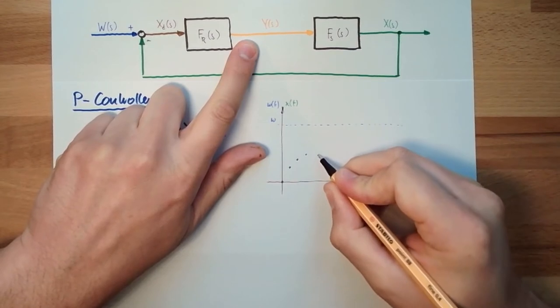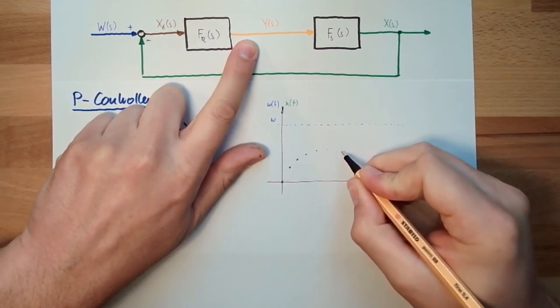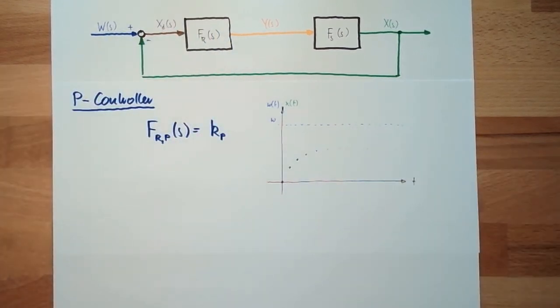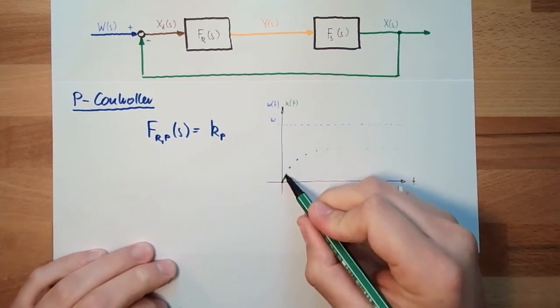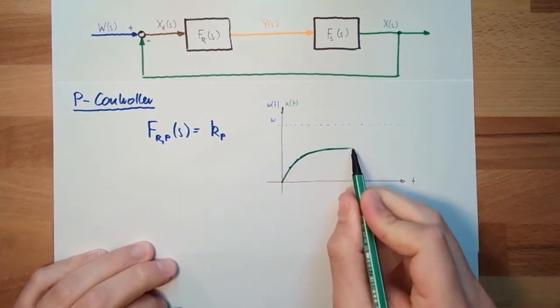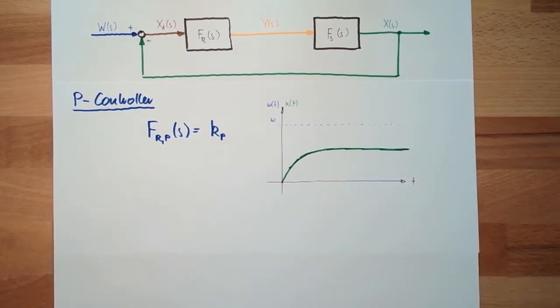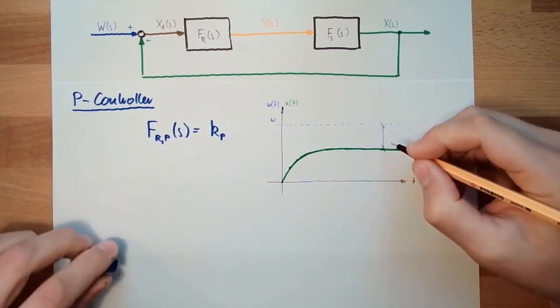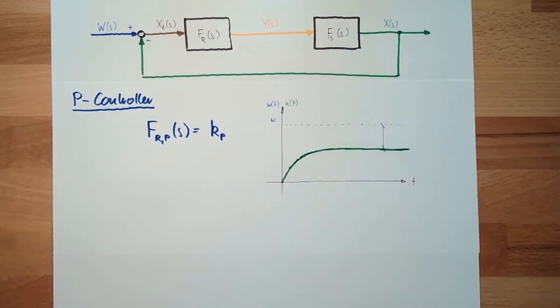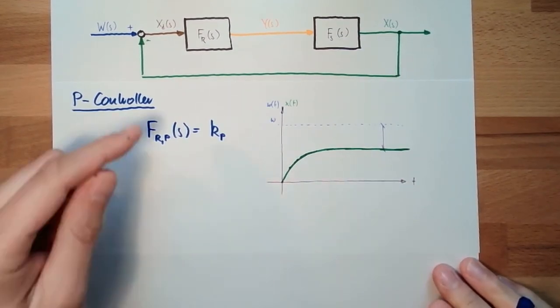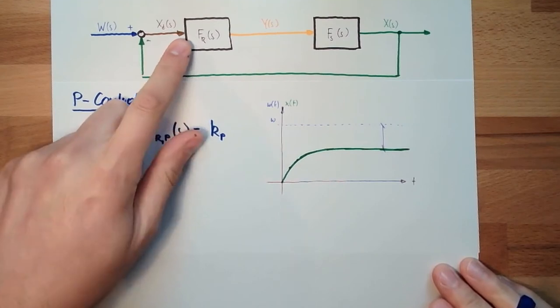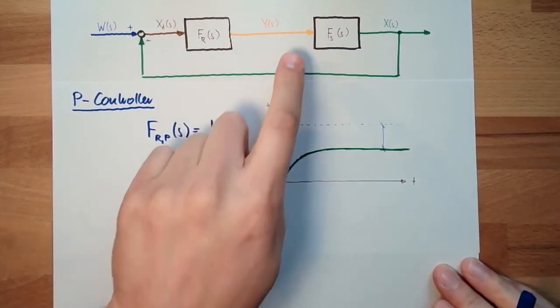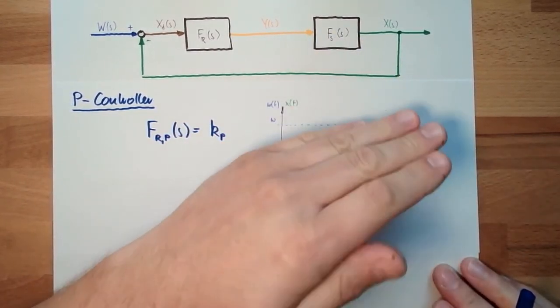It will not grow that fast anymore. And at some point in time, it's just enough that we have a constant deviation, remaining constant deviation between the reference value and the regulated value, control variable.